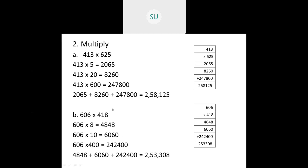Question 2, multiply: first question is 413 into 625. We multiply 413 with 5 in the ones place to get 2,065. Then 413 into 20 gives 8,260. Then 413 into 600 gives 2,47,800. Adding 2,065 plus 8,260 plus 2,47,800 we get 2,58,125. So the product of 413 and 625 is 2,58,125.